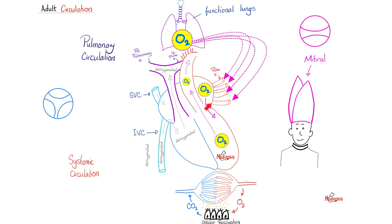We start in the left ventricle, which has oxygenated blood. It pumps from the left ventricle to the aorta through the aortic valve. Oxygenated blood goes through big arteries, then smaller arteries, then arterioles, and then capillaries. On the arterial side, oxygen is given to the cell. The cell takes oxygen and nutrients, uses them for metabolism and cellular respiration, then dumps carbon dioxide and waste into the venules. Deoxygenated blood flows into veins, then the superior and inferior vena cavae, until reaching the right atrium, which pumps blood to the right ventricle through the tricuspid valve.